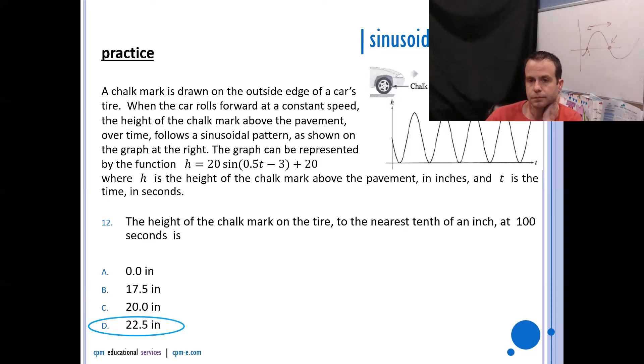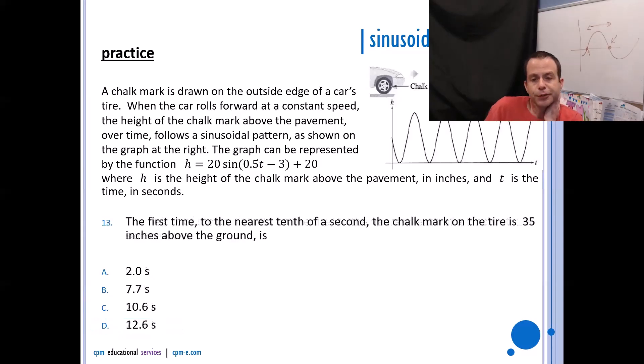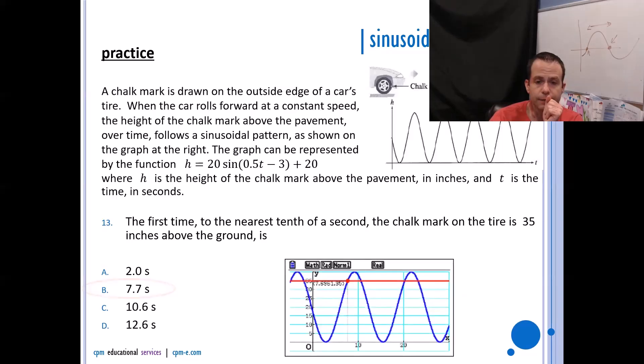The first time to the nearest tenth of a second the chalk mark on the tire is 35 inches above the ground. Now, you don't really need to be going to 100 anymore, so you could maybe bring your x max down to 15 or 20. Then what you want to do, if you're a Casio kid, you can go G-SOLV x calc, and TI kids, you can go y2 is 35 and then solve the intersection point. You're looking for the x value of that answer, and that should give you 7.7 seconds.